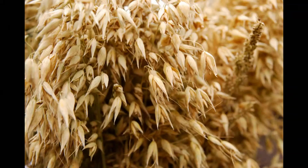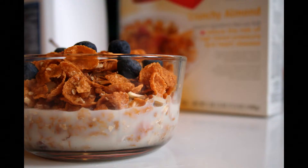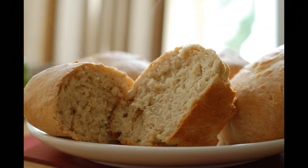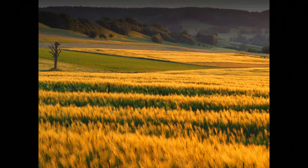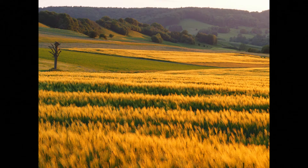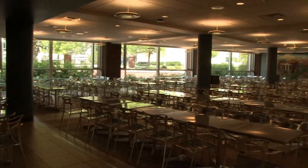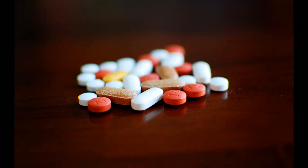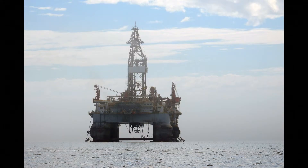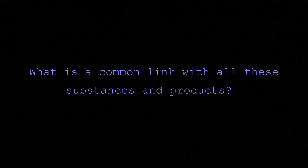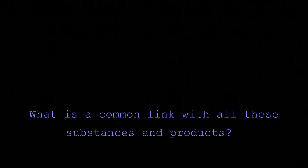Grains — they make up your cereals, your bread, your pasta. They are a crop harvested from a farmer's field that travels all the way to your table. Mining, pharmaceuticals, oil, and gas. What is a common link with all these substances and products?